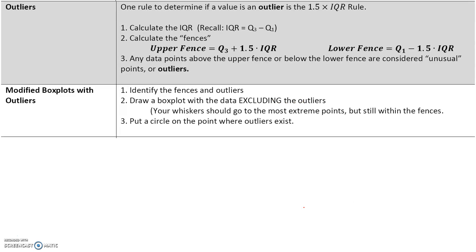Now let's talk about outliers. Outliers are values that are an abnormal or unusual distance away from the rest of the values. One rule to determine if a value is an outlier is the 1.5 times IQR rule. We calculate the IQR (Q3 minus Q1), then compute the upper fence as Q3 + 1.5×IQR and the lower fence as Q1 − 1.5×IQR. Any data points above the upper fence or below the lower fence are considered outliers.